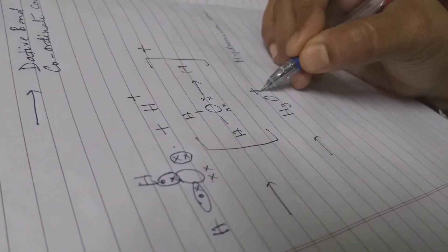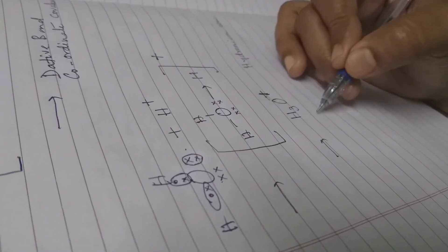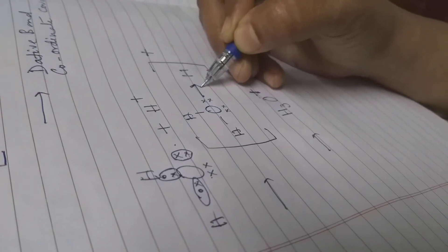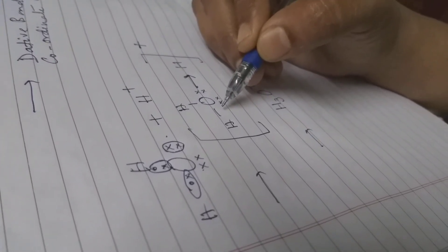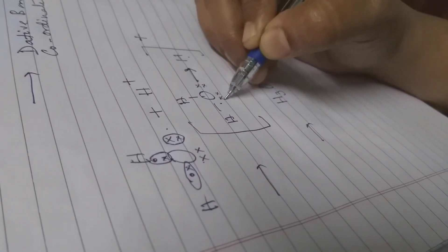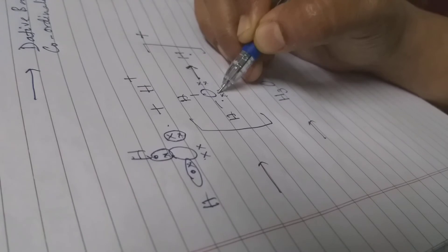H3O+ is a charged particle called a radical. Here again this is the indicator that this is a dative bond showing this is the donor atom and this is the acceptor atom. From the donor to the acceptor I am showing an arrow to indicate who is donating and who is accepting.